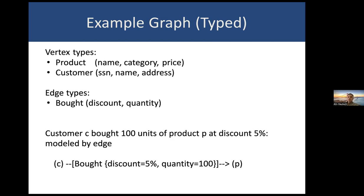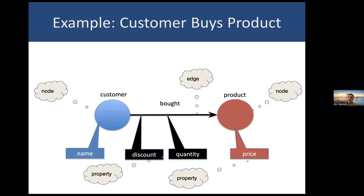So, for example, to model the fact that customer C bought 100 units of product P at a discount of 5%, we would construct an edge that leads from the node for C to the node for P with the corresponding attributes. Visually, I'm going to depict this in our running example: we have the customer and product blobs standing for the vertices, and the callouts tell you what properties these vertices as well as the edge connecting them carry.